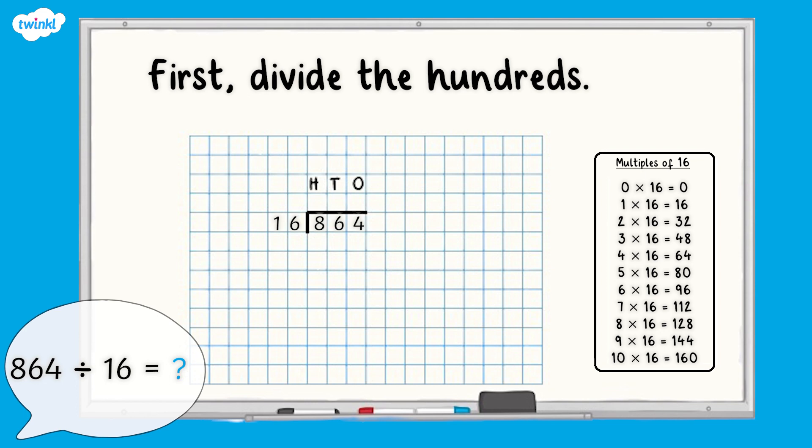First divide the hundreds. Pause here and complete this step. 8 hundreds divided by 16 equals 0 hundreds remainder 8 hundreds. Did you write all the digits in the correct place?